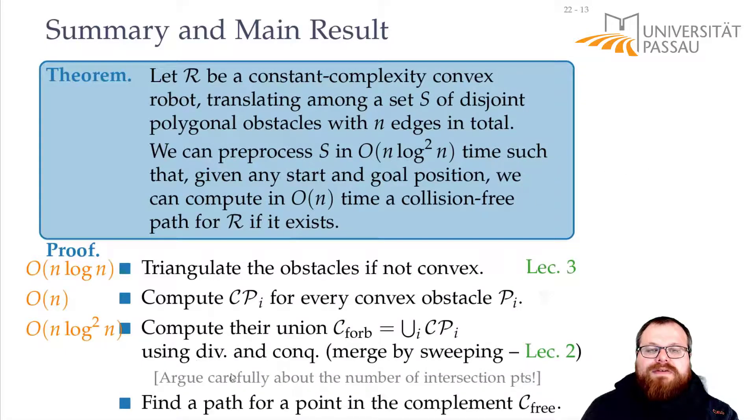And then, we only have to find a path in the complement. And this is for a point that we did in the very first part that we know how to do. We can, again, do our preprocessing in O(n log n) time for all those convex polygons that we get now in the forbidden space. And then, find a path there using the trapezoidization.